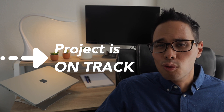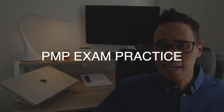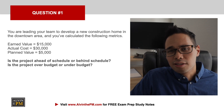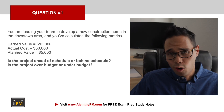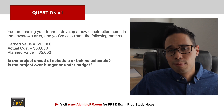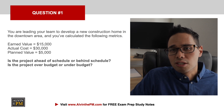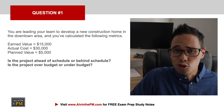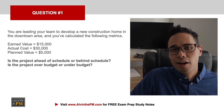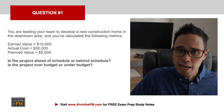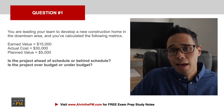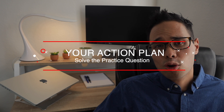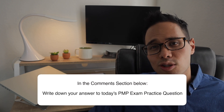Now that you know what each of these formulas mean, let's tackle a practice question. You are leading your team to develop a new construction home in the downtown area and you've calculated the following metrics: Earned Value = $15,000, Actual Cost = $30,000, and Planned Value = $5,000. Is the project ahead of schedule or behind schedule? Are we over budget or under budget? Pause the video now, solve the question, and write down your answer in the comments below.